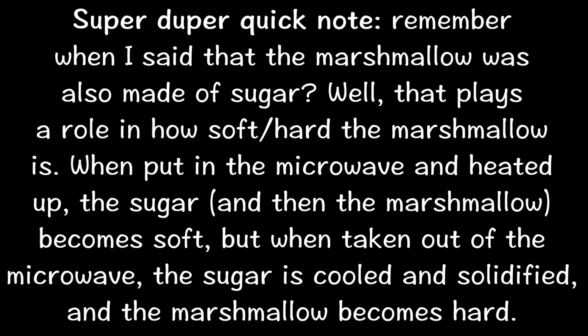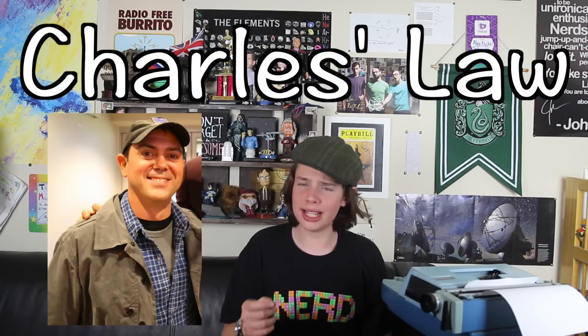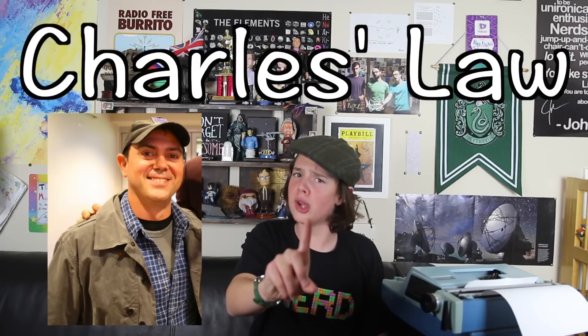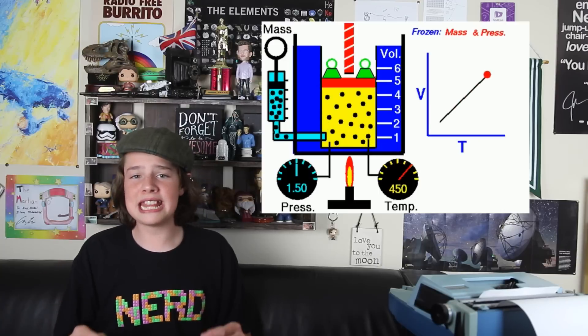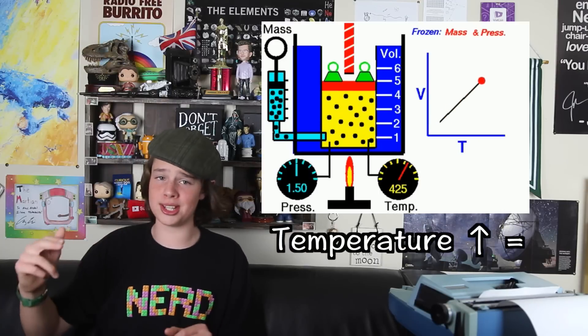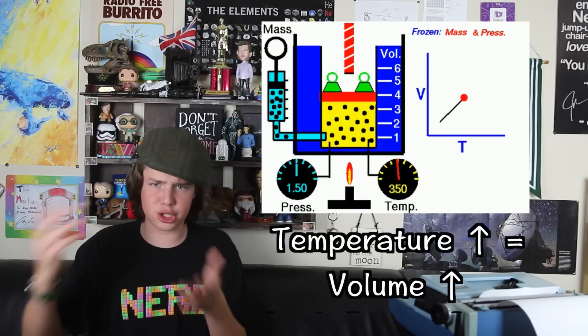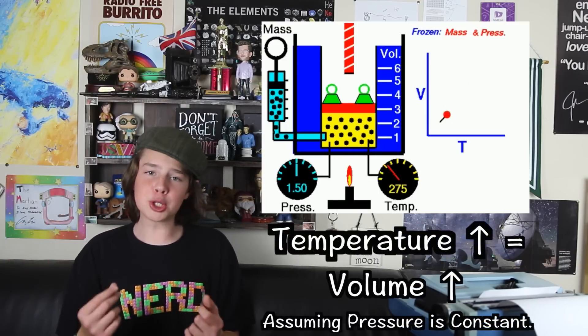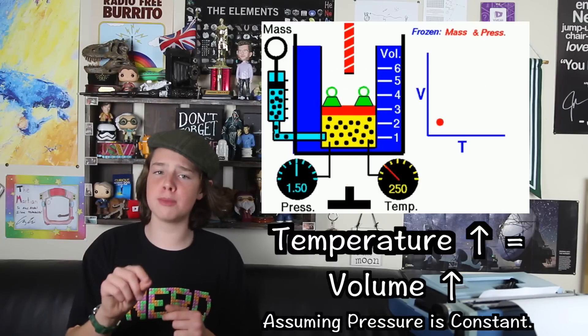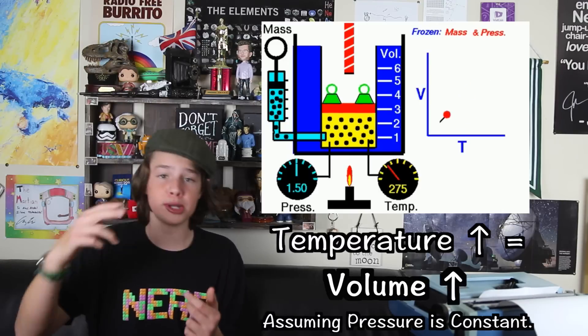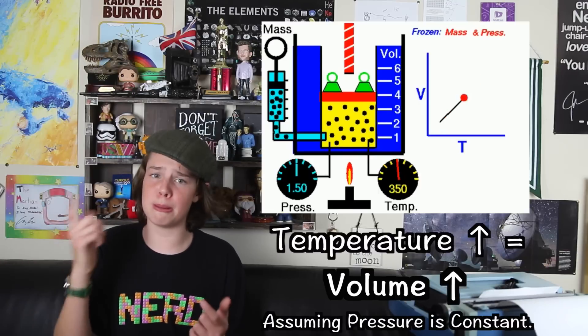This is a prime example of Charles's Law — and no, that doesn't refer to Charles Boyle, though there is also a gas law called Boyle's Law. Charles's Law states that when the temperature of a gas increases, the volume also increases, assuming pressure is constant. The temperature of the air in the marshmallow's air pockets increases, so the volume of those pockets — and subsequently the whole marshmallow — increases. And that's just about it!